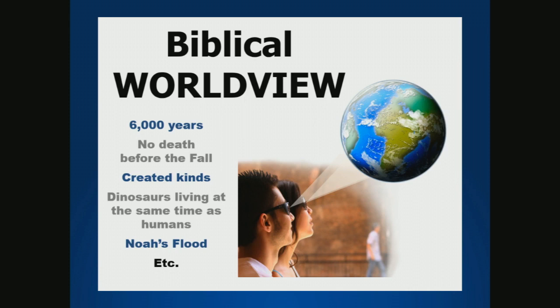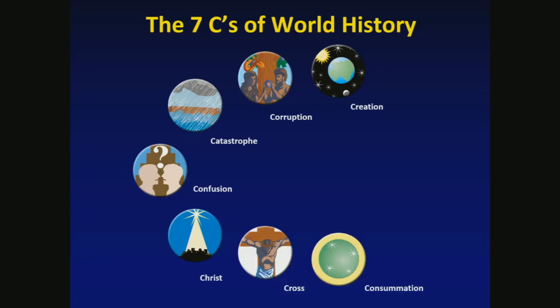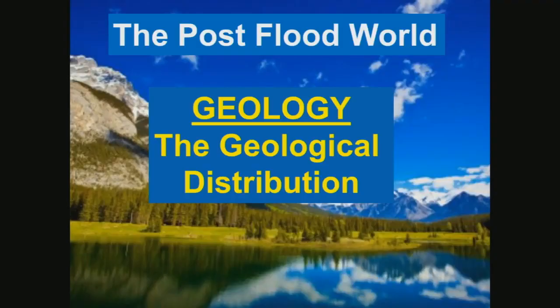In that biblical worldview, we can see a series of events that have happened — the seven C's of history, which comes from Dr. Gary Parker. We used it at Answers in Genesis; it's the storyline of the Creation Museum: Creation, Corruption, Catastrophe, Confusion, Christ, the Cross, a future Consummation. Seven major events in the history of the world. If we can begin looking at our world through this type of acrostic, we can make sense out of the world that we live in.